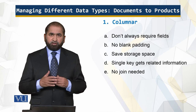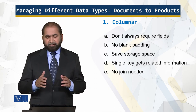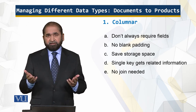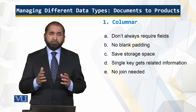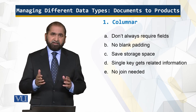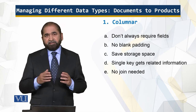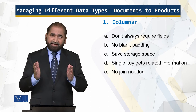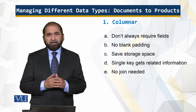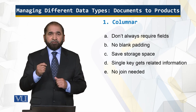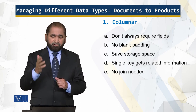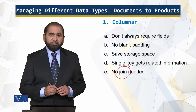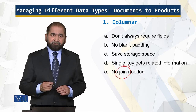The advantage of the columnar approach is that you don't always require all the fields, because in real life all fields may not be available. So there is no blank padding, as opposed to a relational model. As a result, data is stored in less space. Additionally, with a single key I can read multiple records through the column, and there is no join needed — which is the biggest advantage, because joins take time.